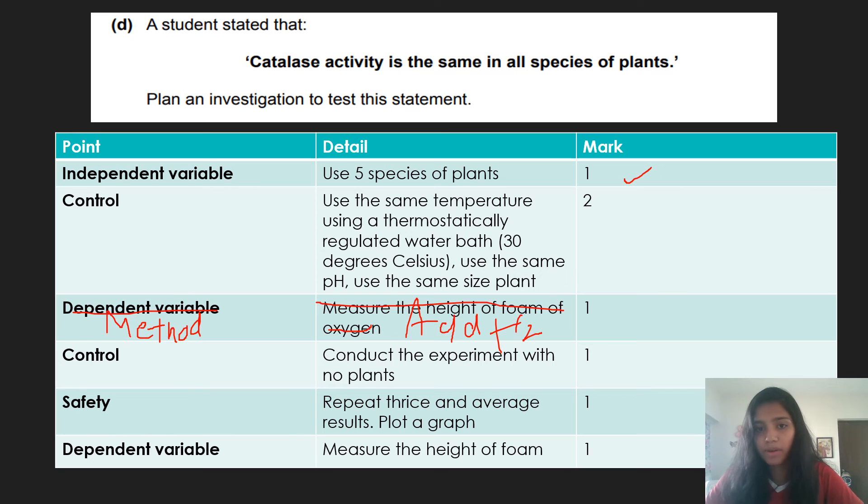Now catalase is already present in plants. So then immediately what you have to do is, after you add H2O2 to one plants, your final result is to measure the height of the foam. The height of the foam is your dependent variable. So you get one more mark here. You get one mark for the method.